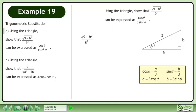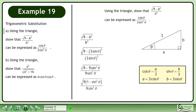We write √ over b². Plug in 3 sinθ for b. Square 3 sinθ in both the numerator and denominator. Factor out 9 in the numerator.